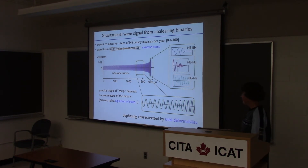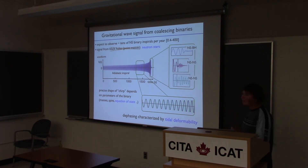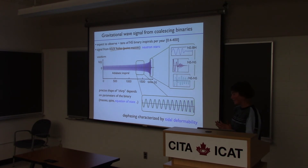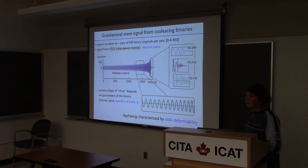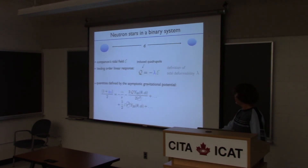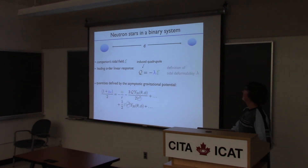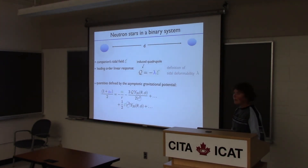This is very nice, because for the matched filtering you don't want to add a zillion parameters to parameterize the neutron star — otherwise you don't know what exactly it is you're measuring. If you can just measure a single parameter, that's much more robust. So what is this tidal deformability? Let me tell you how we try to model this.